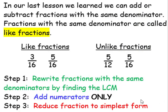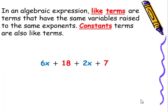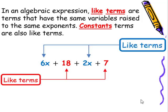This is very similar to when we were talking about like fractions and unlike fractions. Unlike fractions did not have the same denominator, so we couldn't add them. Like fractions had the same denominator, so we could add. In an algebraic expression, like terms are terms that have the same variable raised to the same exponent. Constant terms are also like fractions. So in this particular case, since these are the same exact variables, x and x, I can say six x plus two x is eight x, and then 18 plus seven is 25.